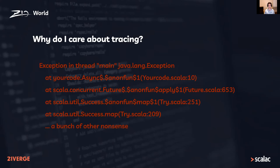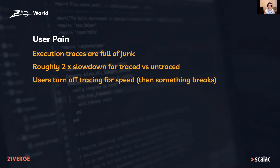ZIO was the first to introduce tracing to the functional effects system. I think Kai did a lot of work on that. It's definitely revolutionary at the time, but it's got some rough edges and there's a significant performance cost to running it. Execution traces are pretty full of junk, and there's roughly a two times slowdown if you're running tracing. This means users often turn off tracing for speed in critical areas of their application, and then something breaks.